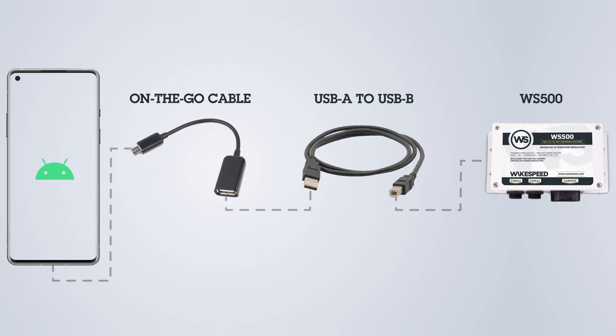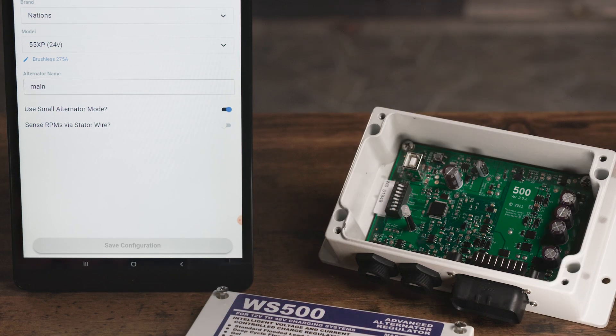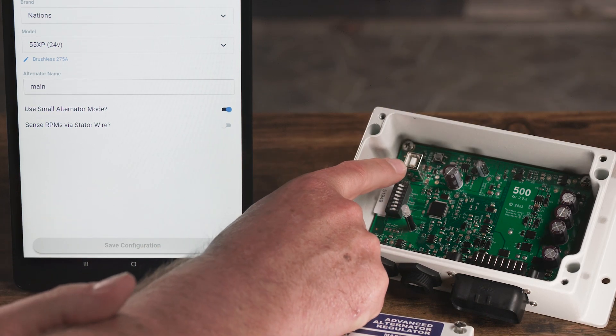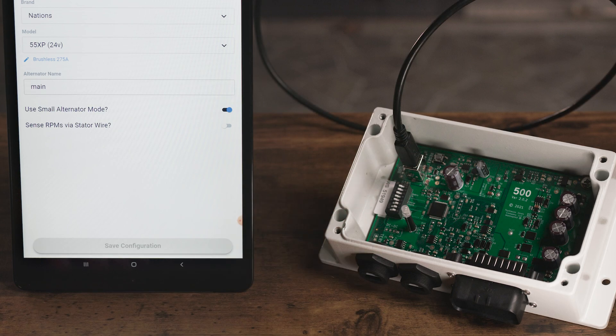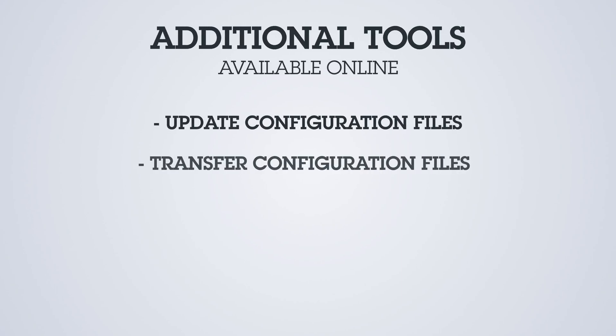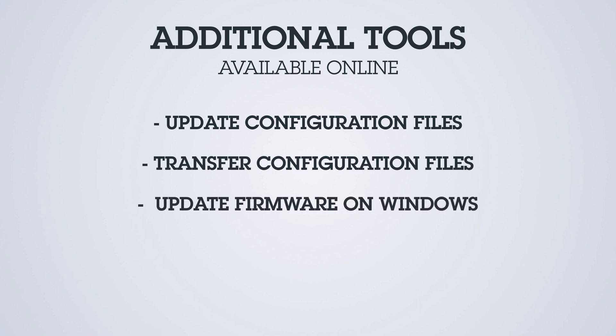Some of the original WakeSpeed regulators used a USB micro connector. Open the box to find which type of USB socket you have and gather the appropriate cable. In addition to being able to use an Android device to monitor and transfer a firmware update, we also have tools to allow you to update and transfer configuration files, as well as update the firmware running on Windows computers.